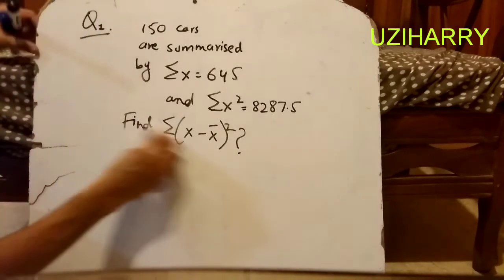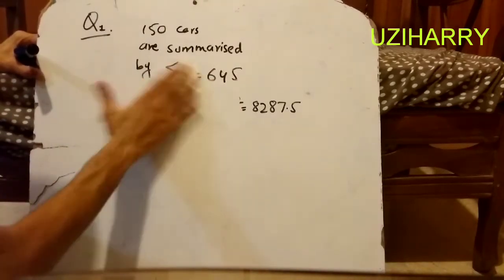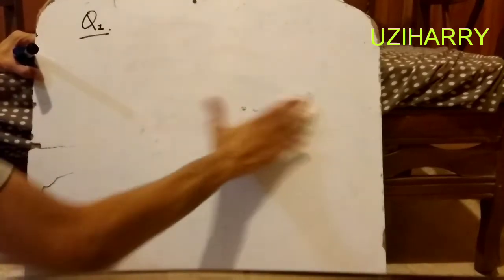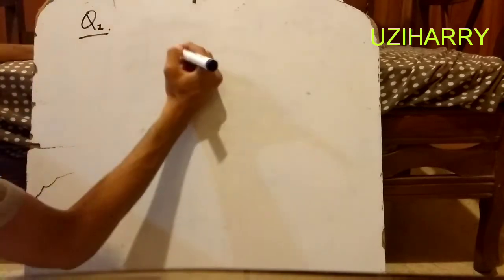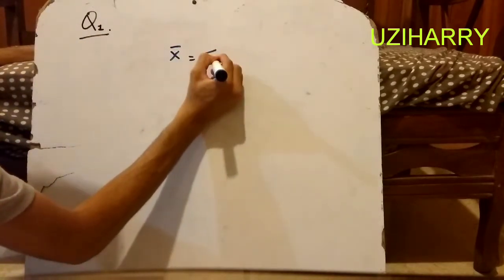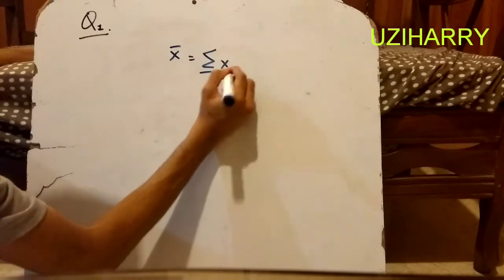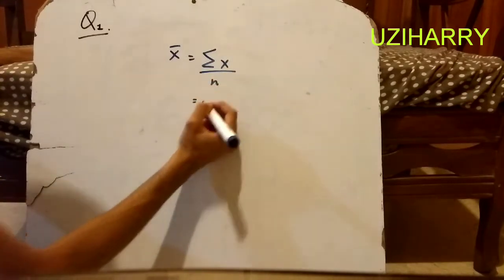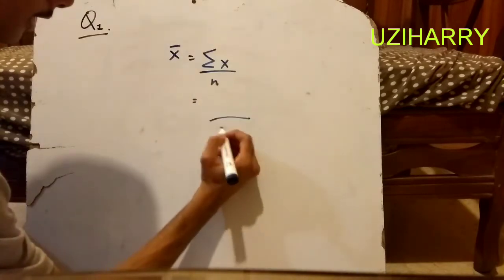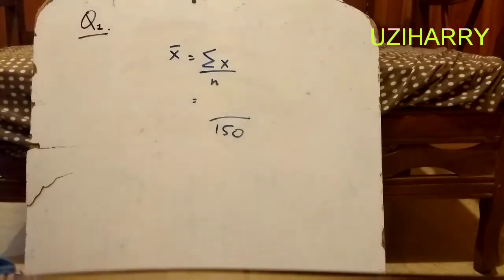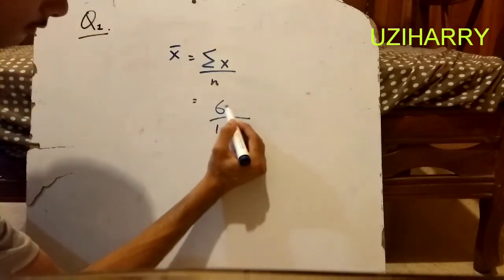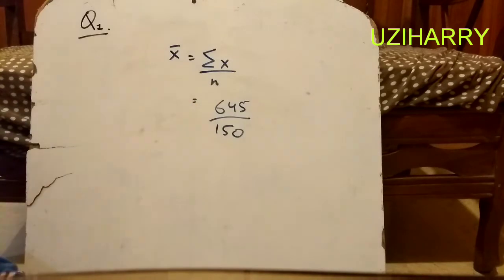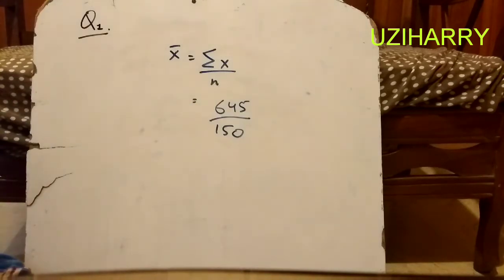The data has been given to you and now we are working for the solution. We know that the formula for the mean is summation of x divided by n. The n is given by 150 cards. And the summation of x is given by 645. And now we can find the mean.